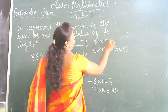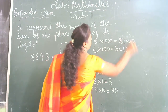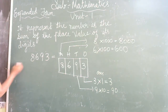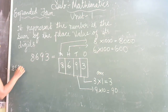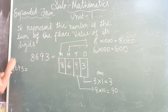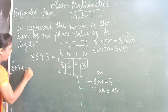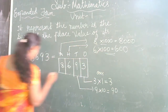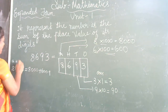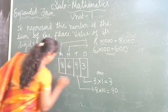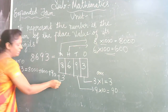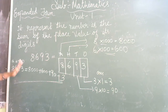8 is in the 1000s place, so 8 times 1000 is 8000. Now you can find the expanded form of 8693. The expanded form is: 8000 plus 600 plus 90 plus 3. This is called the Expanded Form.